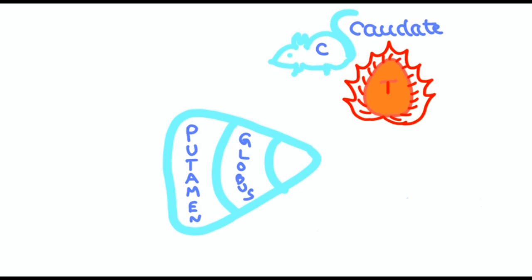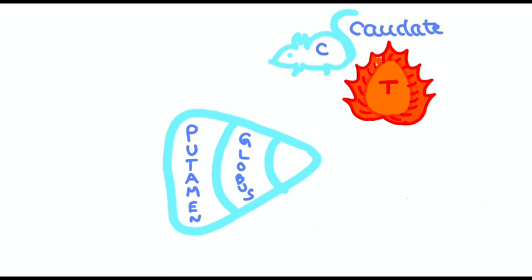the thalamus, comprising excitatory neurotransmitters. Next is the premotor and supplementary motor area in the cortical regions which controls these circuits.